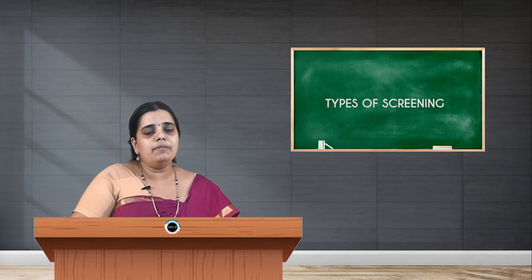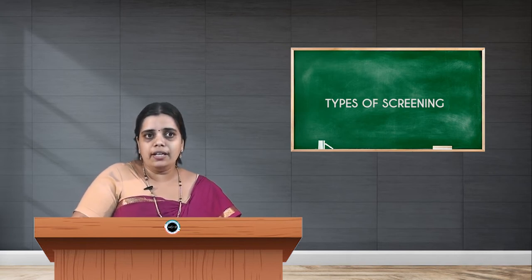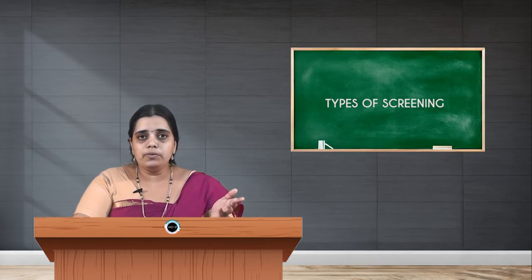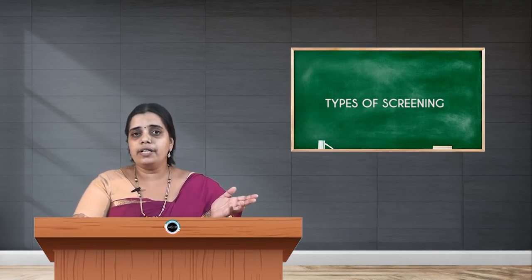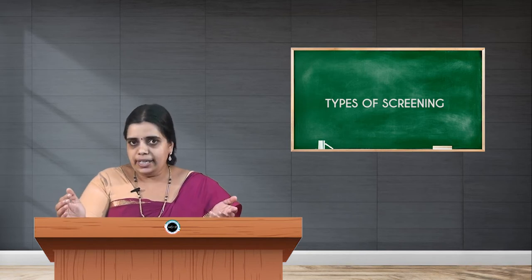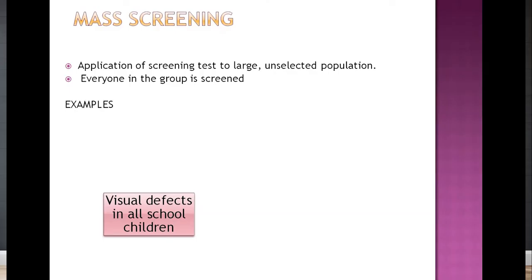So in today's class we will learn what is mass screening, what is high risk screening, what is multipurpose screening, and what is multiphasic screening. Application of screening test to a large unselected population is called mass screening. The speciality of this screening is that everyone in the group is screened for a particular disease. For example, you take your sphygmomanometer, go to Ujire, and subject everybody available for BP checkup. There is no particular criteria; it is a large unselected group and everyone is screened.